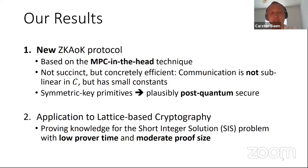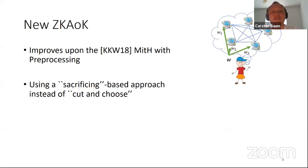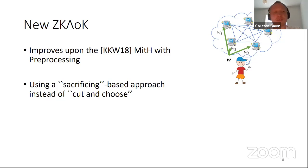We show interesting applications to lattice-based cryptography, giving a concrete instantiation to prove knowledge of a short integer solution witness with low prover time and moderate proof size over the state of the art. Our new ZK argument of knowledge improves upon the previous work of Katz et al. on MPC-in-the-head with efficient preprocessing, which uses a sacrificing-based approach.